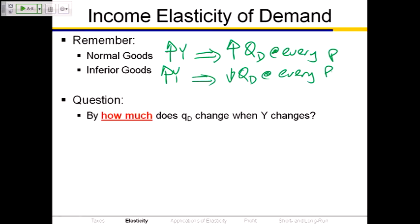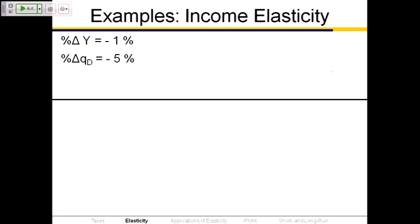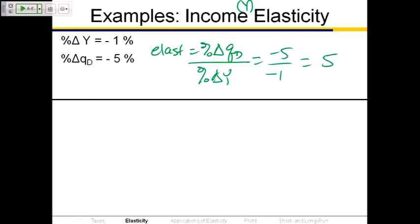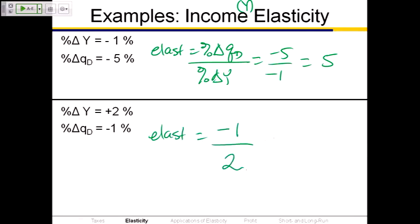The concept of income elasticity is a how-much question. Suppose someone found that when there was a negative 1% change in income — Y is the shorthand economists use for income — the quantity demanded for some good falls by 5%. The income elasticity of demand is the percentage change in QD divided by the percentage change in income: negative 5 divided by negative 1 equals 5. For a different example, suppose income went up by 2% and quantity demanded went down by 1%. Elasticity equals negative 1 divided by positive 2, which is negative 0.5. You don't have to convert to decimals; just use the percentages directly.